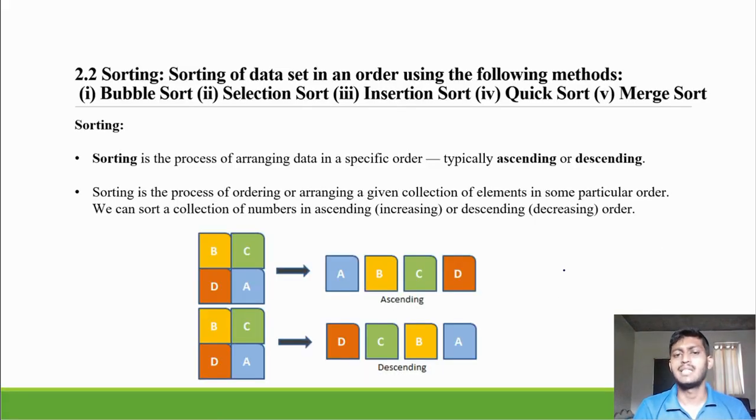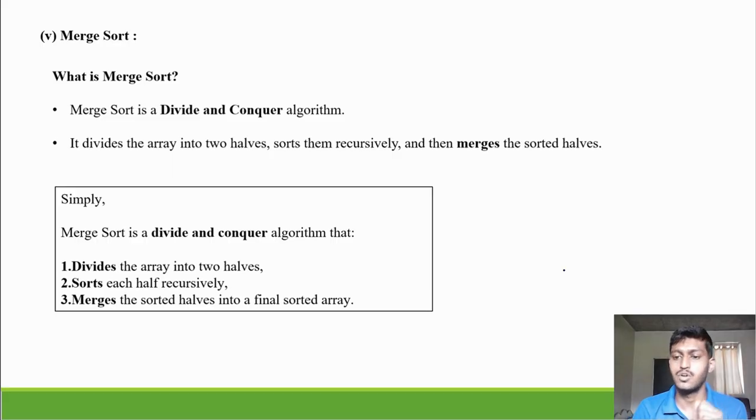Sorting means आपको डेटा सेट को sort करना, in ascending order or descending order. Unordered data को ordered करना पढ़ेगा. This is a sorting technique. Varieties of sorting techniques exist और आज इस वीडियो में हम merge sort को देख रहे हैं. What is a merge sort?